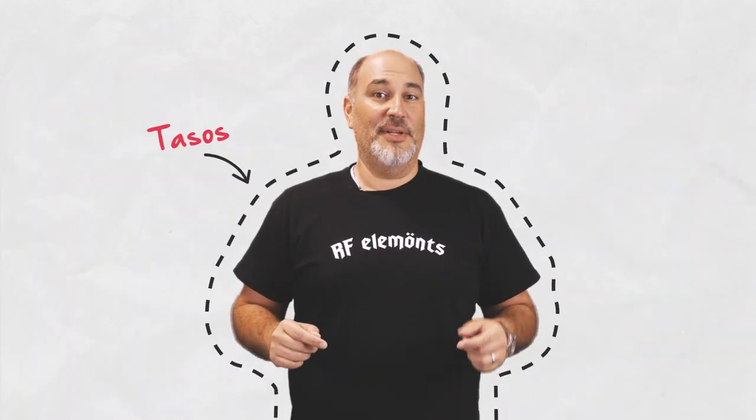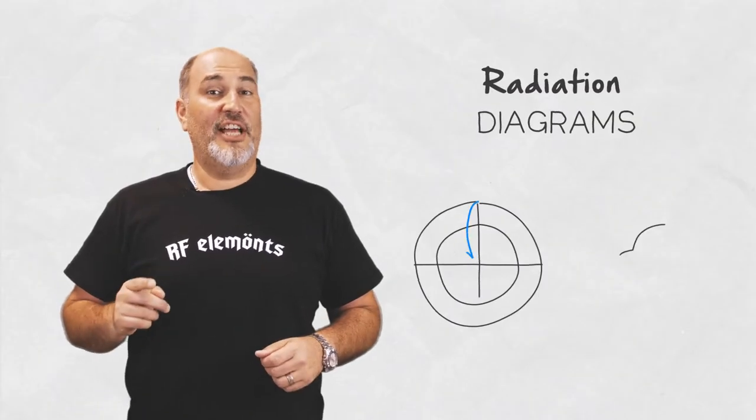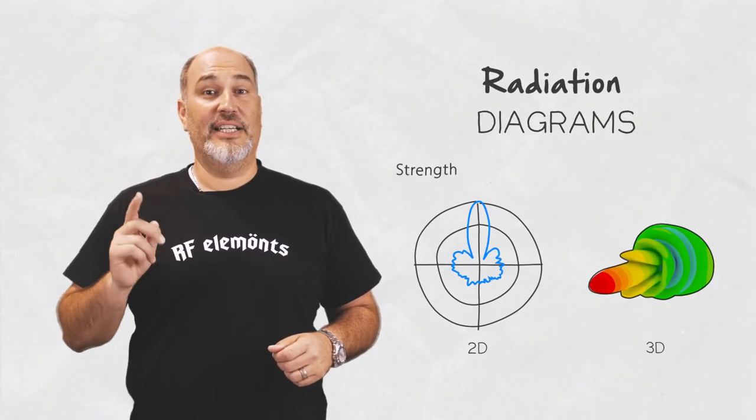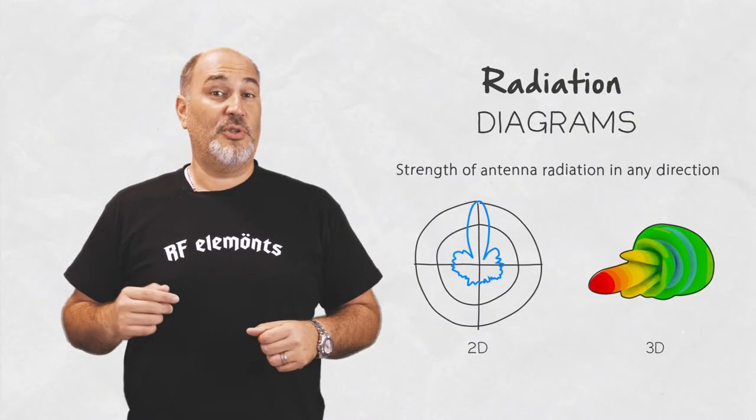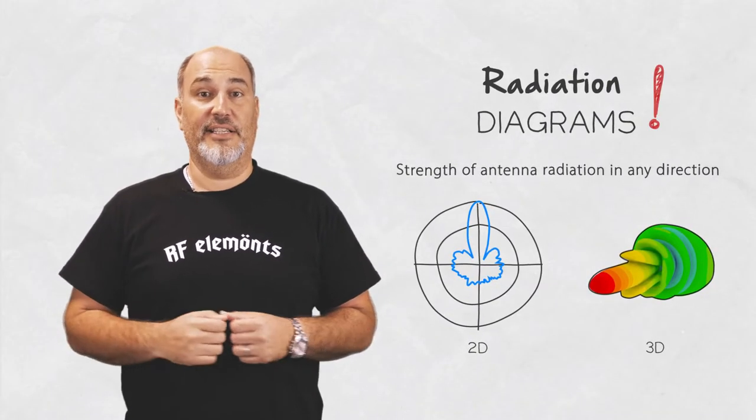Hey everybody, it's Tassos with RF Elements and today we'll be talking about radiation diagrams of antennas. The radiation diagram of an antenna describes how strongly an antenna radiates in any direction. It's also called a radiation pattern and it's one of the most essential parameters of any antenna.